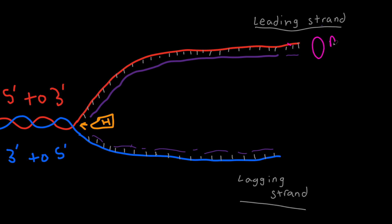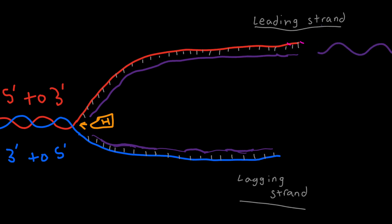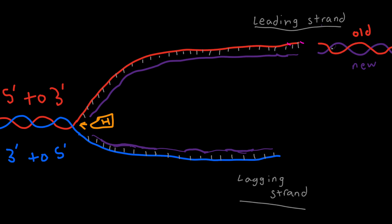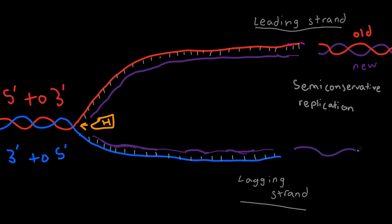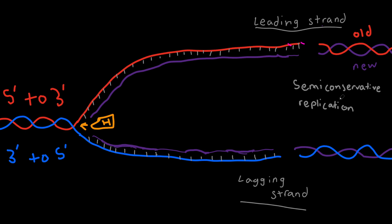This is when DNA ligase comes in. DNA ligase attaches all those fragments together, creating the long strand of DNA we know. It also proofreads the DNA to see if everything is in order. Our final product is a newly made strand of DNA paired with the original DNA strand — this is known as semi-conservative replication, and it applies to both the red and blue strands.